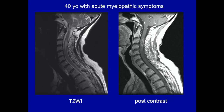Here's a 40-year-old with acute myelopathic symptoms. This is the T1-weighted scan on the left and the post-contrast scan on the right. On T2 there is hyperintense signal spanning about two vertebral body levels, pretty central. On post-contrast imaging there is more peripheral enhancement. This looks like an intramedullary spinal lesion, confirmed on axial imaging to be within the spinal cord. With peripheral enhancement, the top differential would be ependymoma.